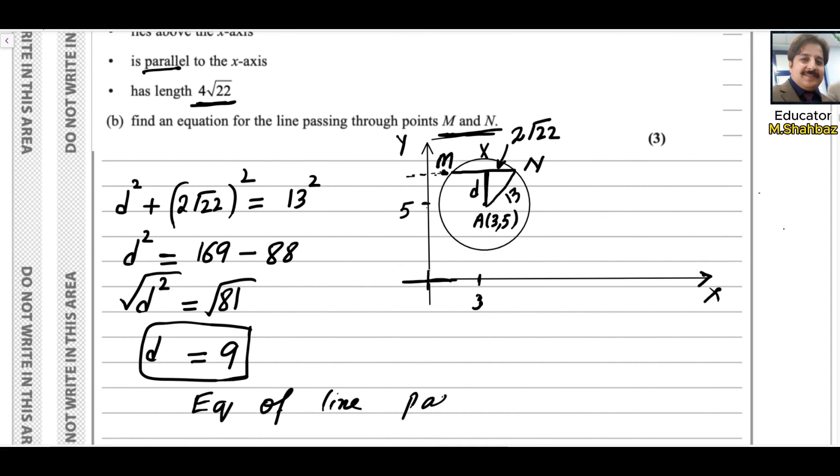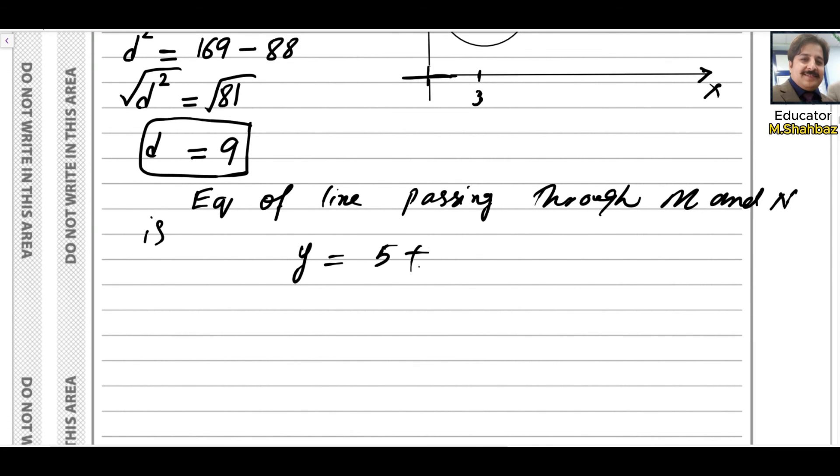If you add 9 to 5 you will get this line. Therefore, the equation of line passing through M and N is y = 5 + 9, so y = 14. This is the equation of line MN and this is the answer for the second part.